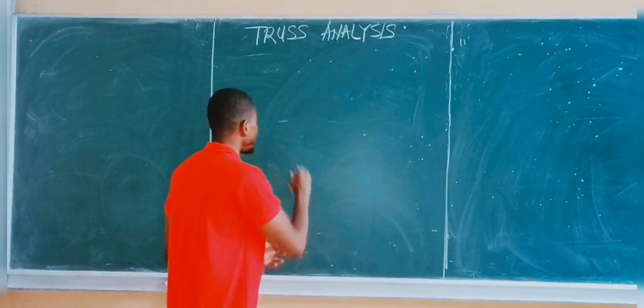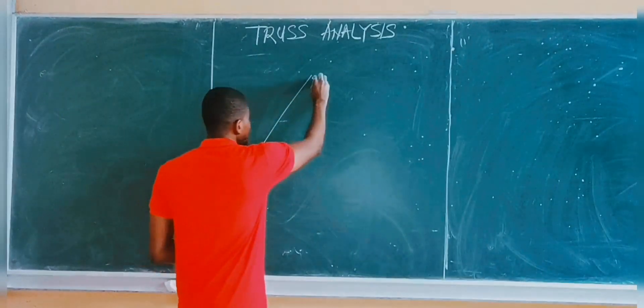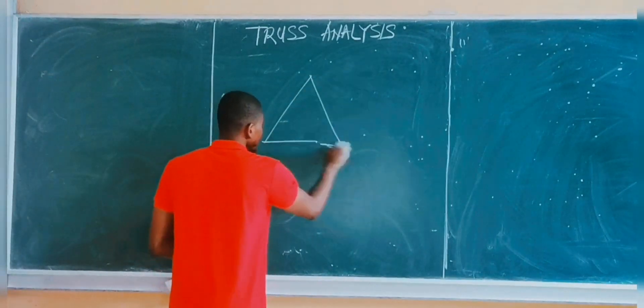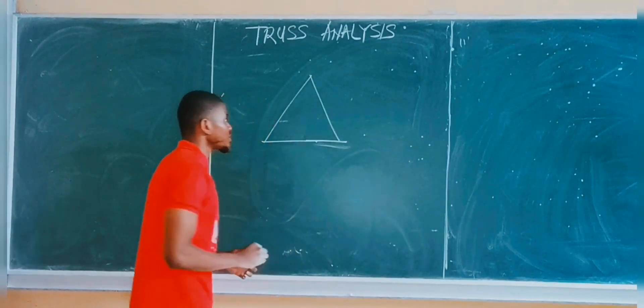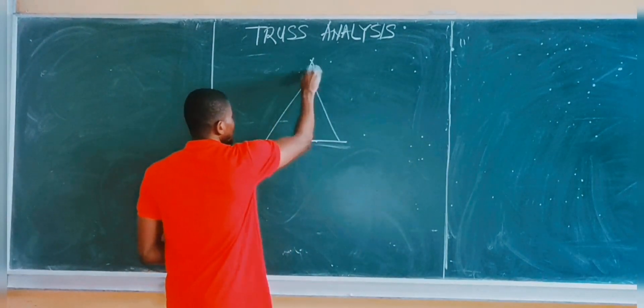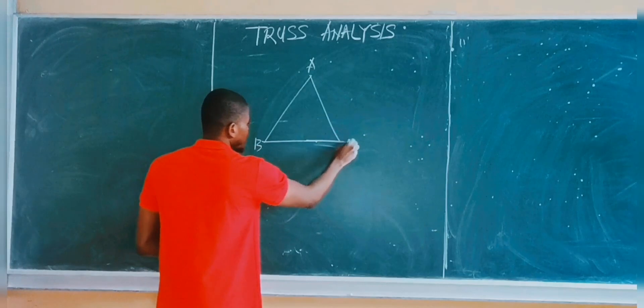For instance, let's say we have something like this. This is an example of what a truss looks like. Let's call them points A, points B, and points C.